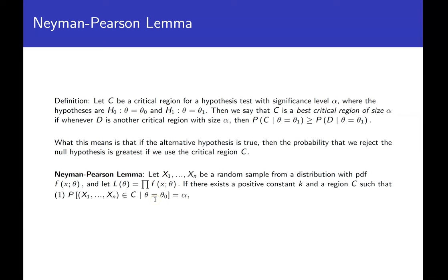We're looking for a positive constant K and a region C. We don't actually ever find the constant K; we just need to make sure it exists. The first condition is that the probability that X1 through XN lands in region C given theta equals theta naught equals alpha — the probability that you reject when you shouldn't, equal to alpha.